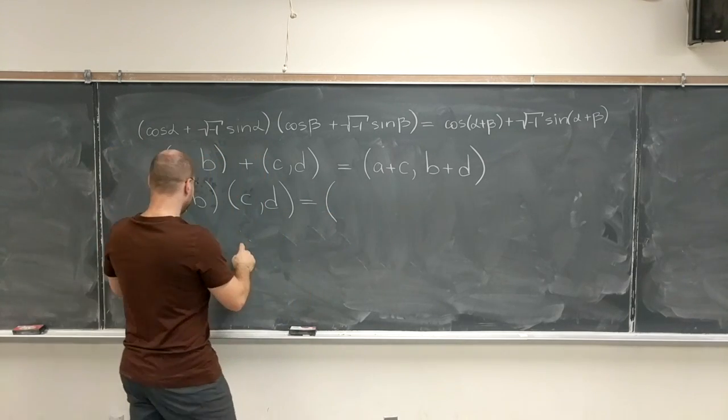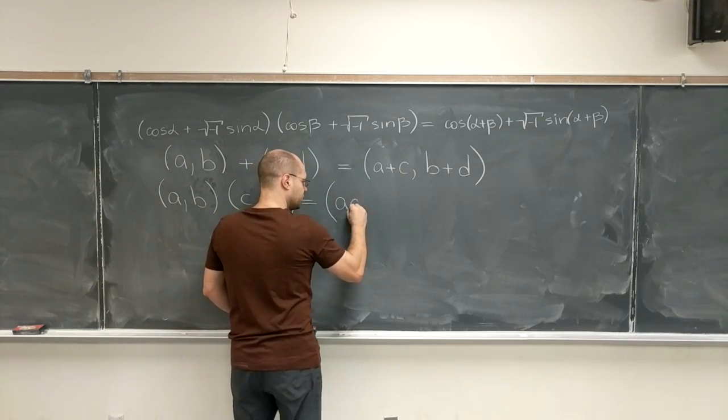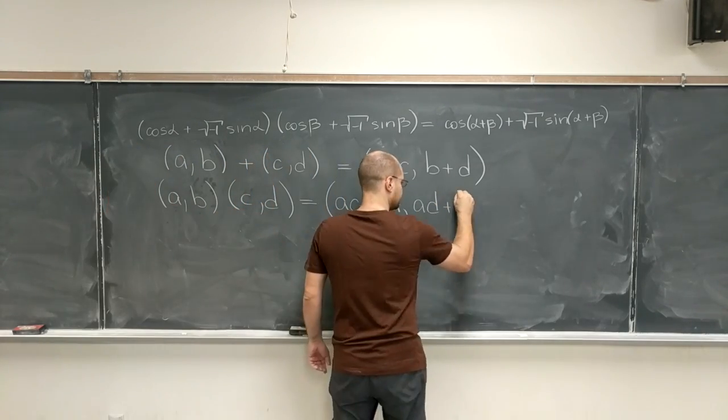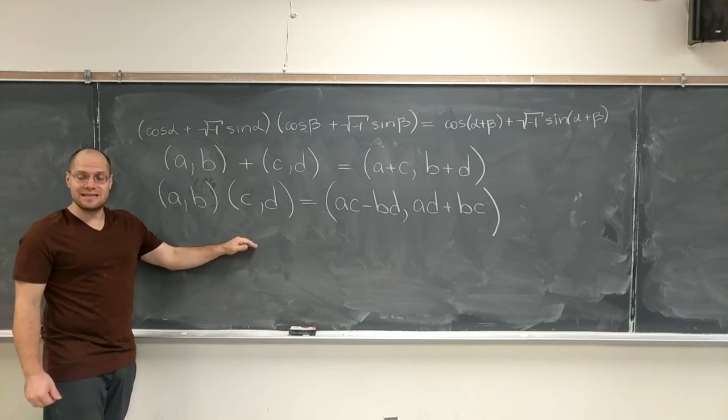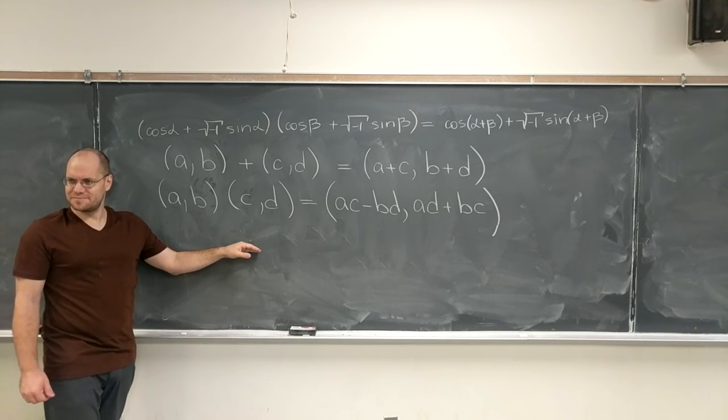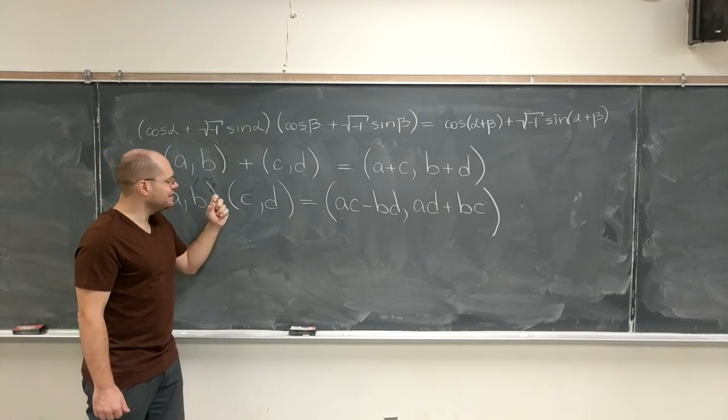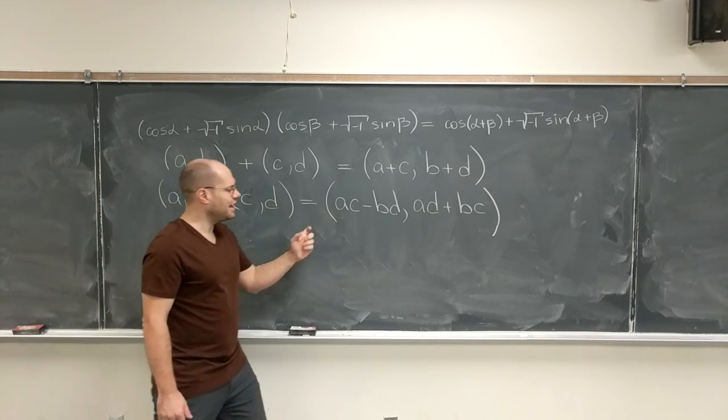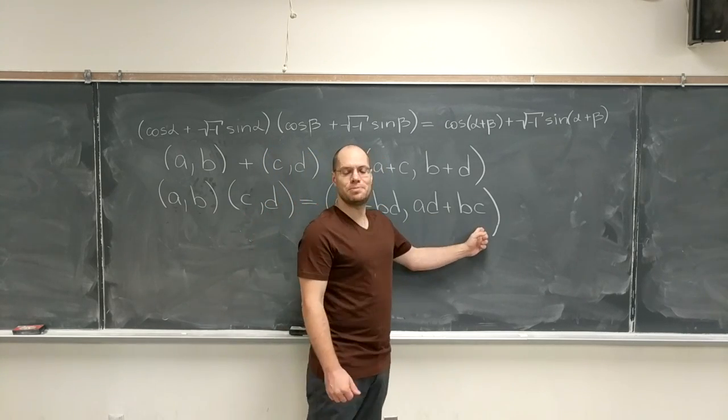Well, we know what it is. It will be ac minus bd. And this, of course, is completely clear where this comes from, right? Because when you multiply a plus bi by c plus di, you get ac minus bd plus i times (ad plus bc).